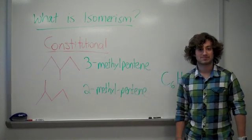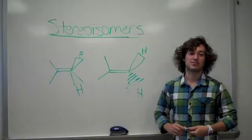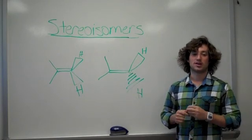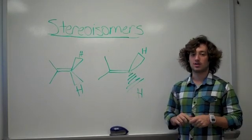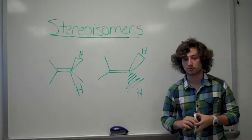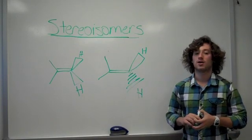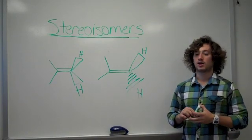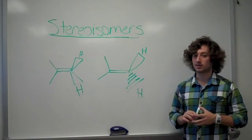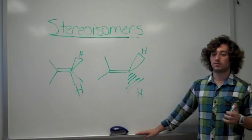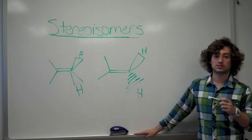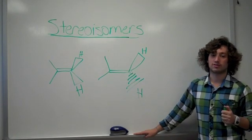The next type of isomers we're going to discuss is stereoisomerism. Now, like constitutional isomers, they will have the same molecular formula, but they will have the same connectivity of their atoms. The only difference is in stereoisomers, the spatial arrangements of these atoms will differ.